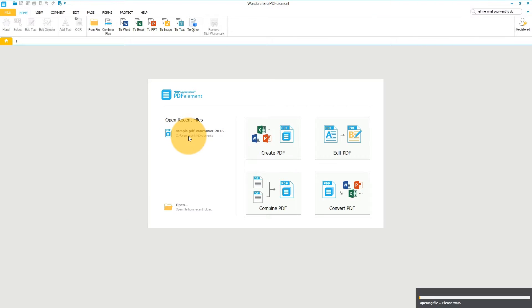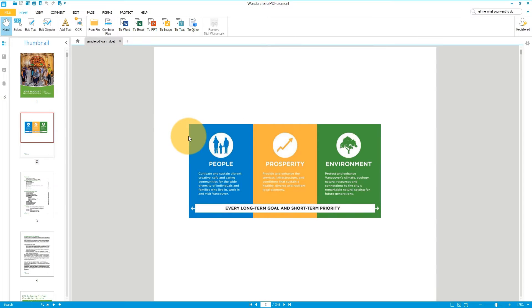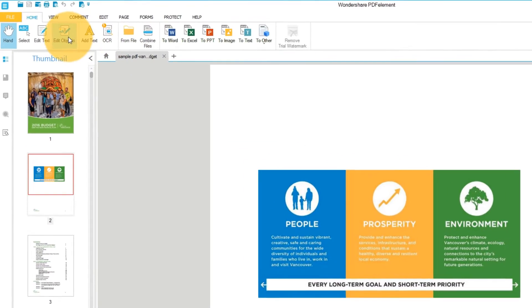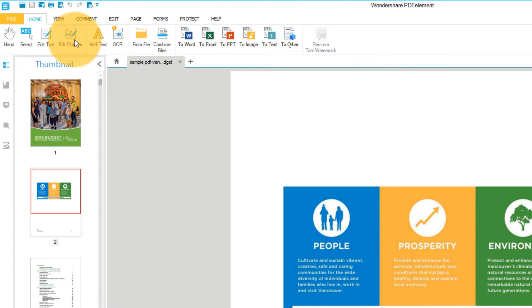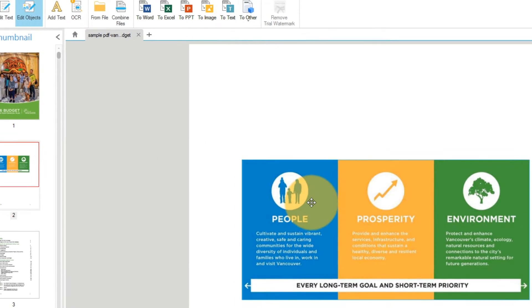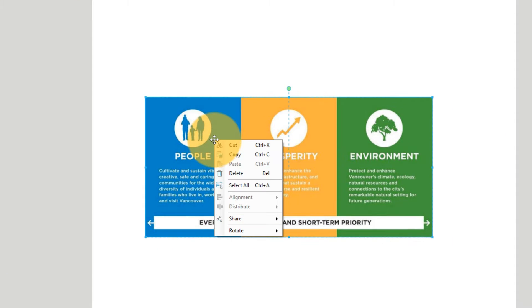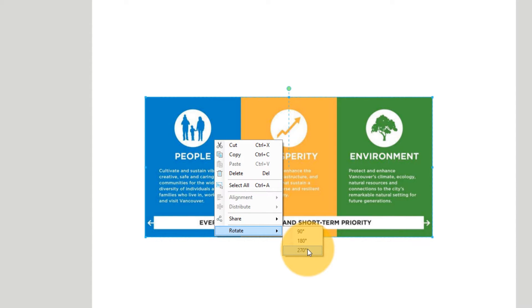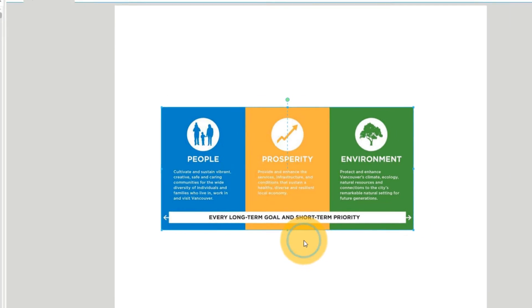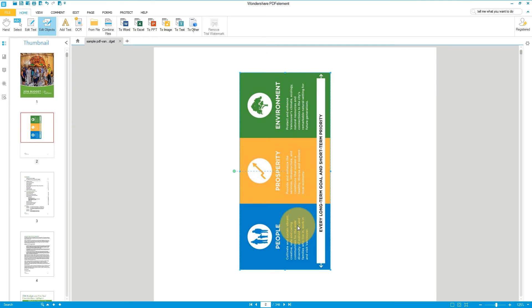I'll click the Edit Object button on the Home tab, then select an image. I'll right-click on the image and hover over Rotate to adjust my image by preset rotational degrees.